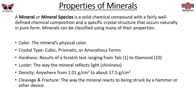A mineral species is a solid chemical compound with a fairly well-defined chemical composition and a specific crystal structure that occurs naturally in a pure form. Minerals can be classified using many of their properties, including physical color, crystal type — such as cubic, prismatic, or amorphous — hardness (typically determined by a scratch test, ranging from very soft like talc powder to diamond at a full 10), luster (the way the mineral reflects light), density (ranging from about 1 gram per cubic centimeter up to 17.5 grams per cubic centimeter), and cleavage and fracture — how the mineral reacts to being struck by a hammer, which helps predict the type of mineral it is.